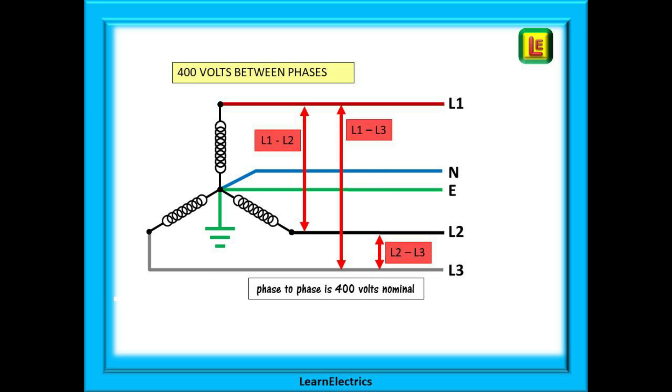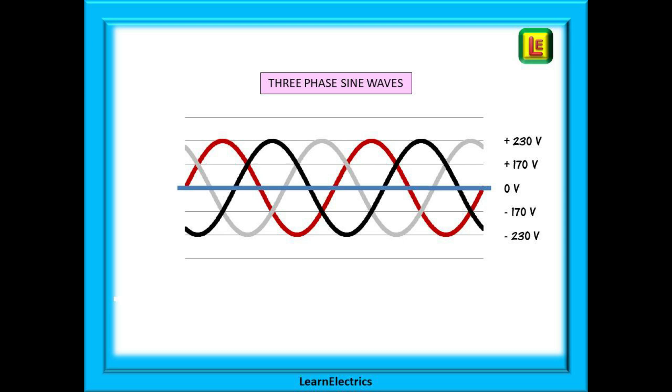If we ignore the neutral and measure across two of the phases we will have 400 volts. The voltage between any two phases, L1 to L2, L1 to L3 or L2 to L3 will always be 400 volts nominal in this system. The question then is, if a single phase is 230 volts, then why, across two phases, is it not 2 times 230, which is 460 volts?